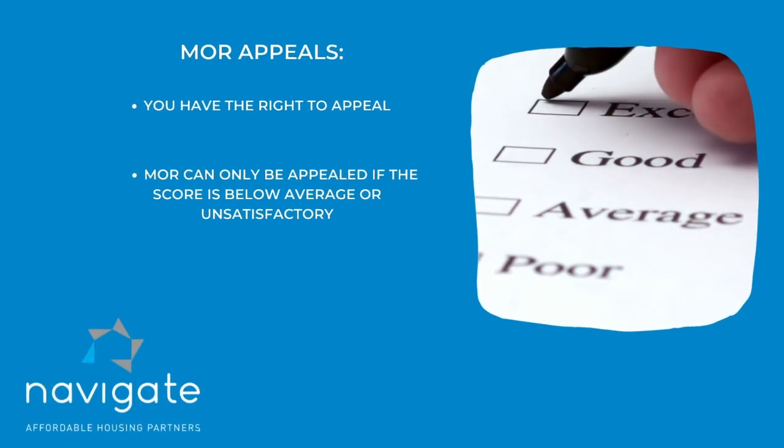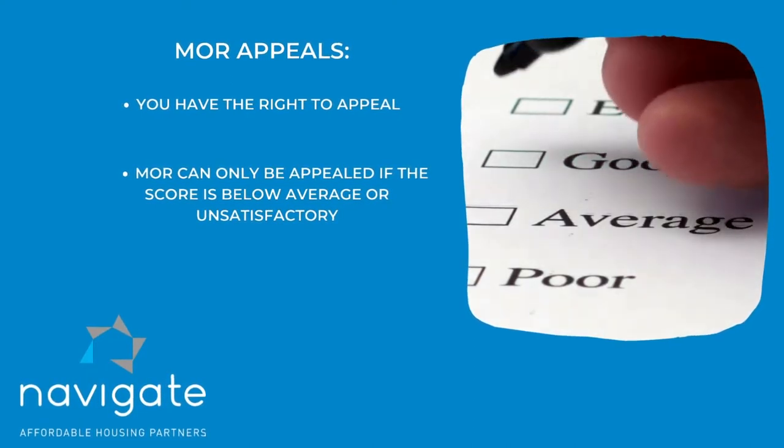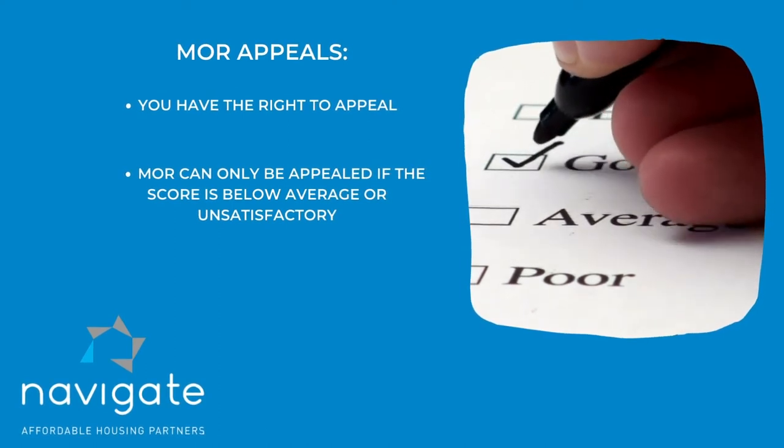Then there's the appeal. You have the right to appeal the score, but you can only appeal a below average and an unsatisfactory — those are the only two you can appeal. If you don't like the answer or the decision you get from the appeal from the contract administrator, you have the right to appeal to HUD, and that's it. The buck stops there.